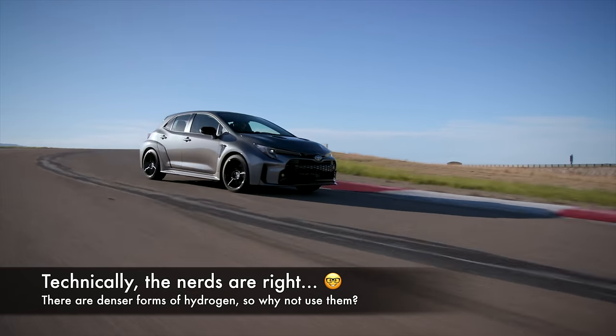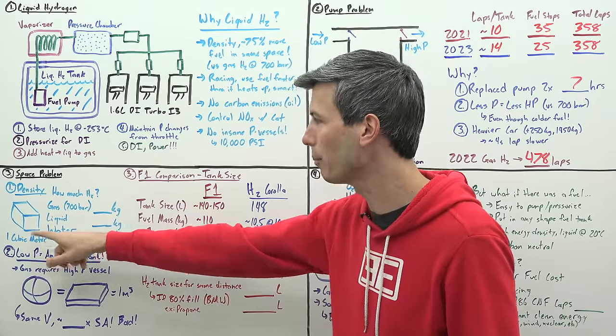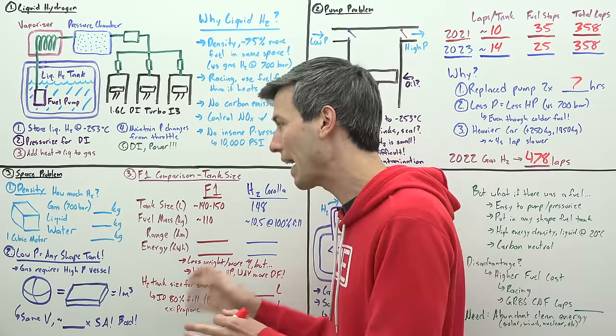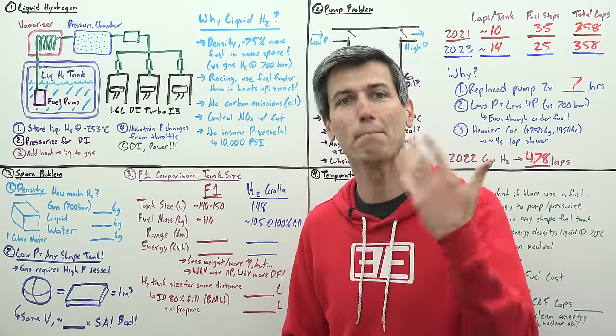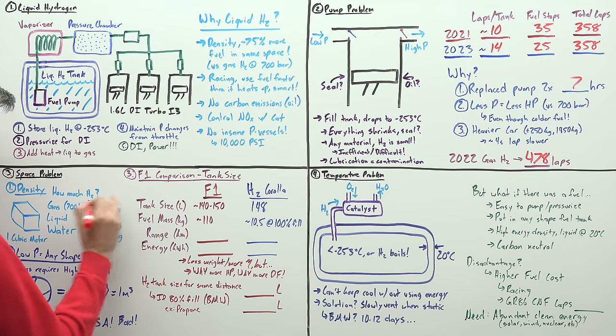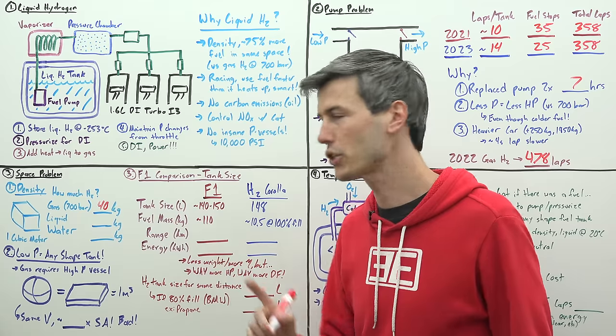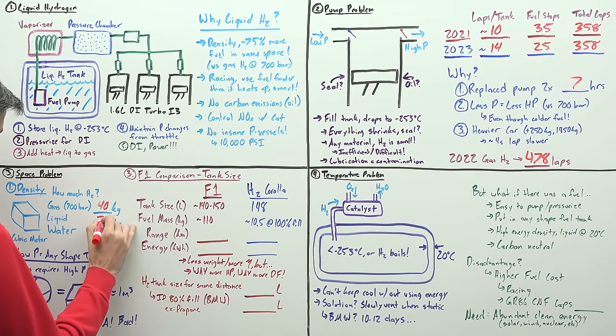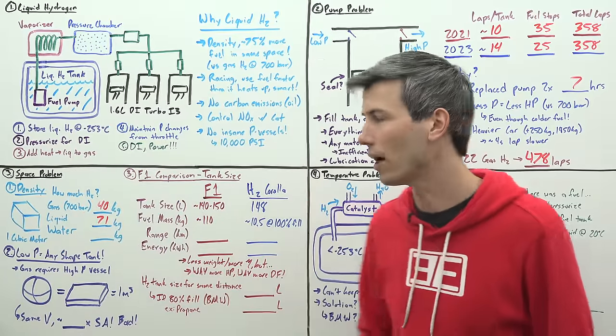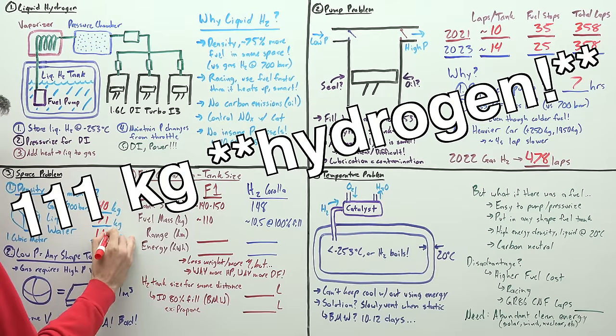Now I know there are some nerds out there ready to claim there are denser forms of hydrogen than liquid hydrogen, so let's address this. Let's say we have a one cubic meter box and fill it with gaseous hydrogen at 700 bar. The mass is about 40 kilograms of hydrogen. If we fill it with liquid hydrogen, about 71 kilograms. If we fill that box with water, 111 kilograms of hydrogen. So there is a more dense way of putting hydrogen in a container.